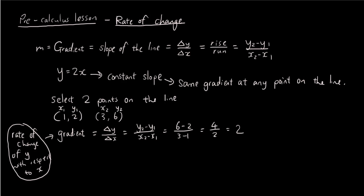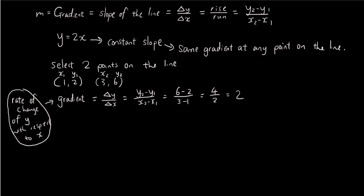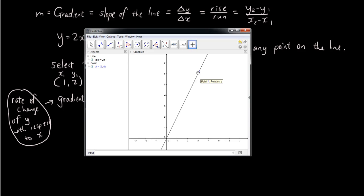Alright, so the gradient of this line is equal to 2. At any point, sorry, any 2 points on the line. Alright, so you can pick any 2 points you want. You can pick, for example, I'm going to zoom out.